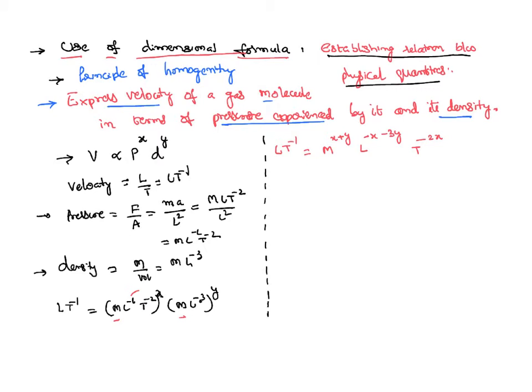Taking that into consideration, along the LHS side dimensions of mass is not there—that means actually it is M^0. So we can say equating dimensions of mass.